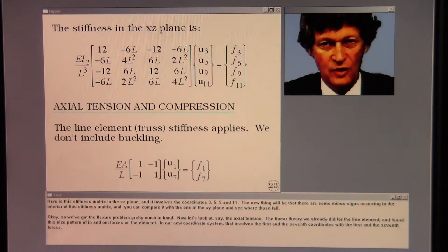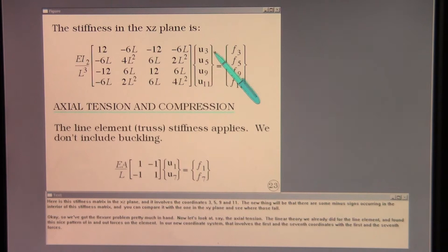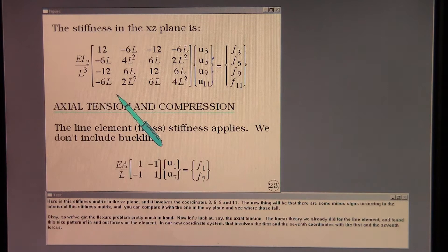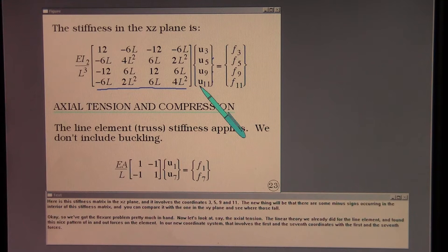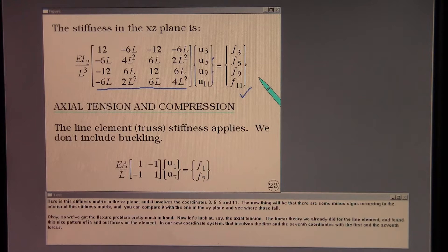Here is the stiffness matrix in the XZ plane. And it involves the coordinates 3, 5, 9, and 11. The new thing will be that there are some minus signs occurring in the interior of the stiffness matrix. And you can compare it with the one in the XY plane and see where those fall. Okay, so we've got the flexure problem pretty much in hand.